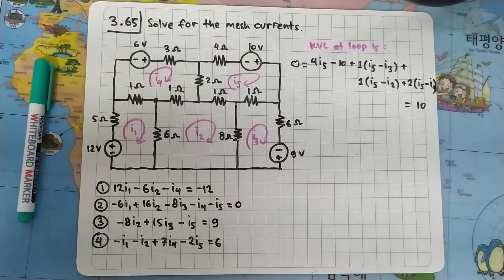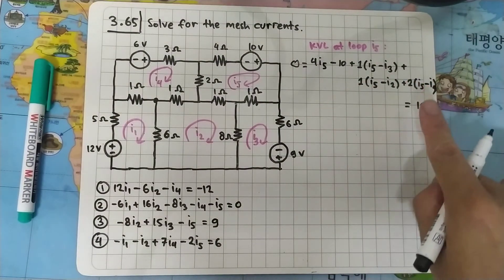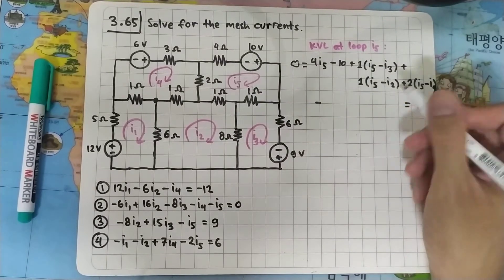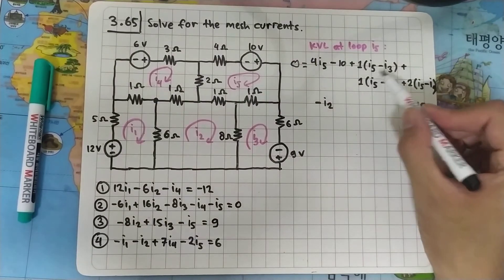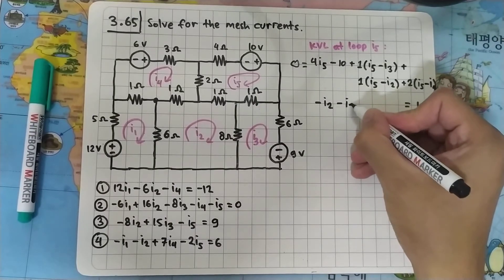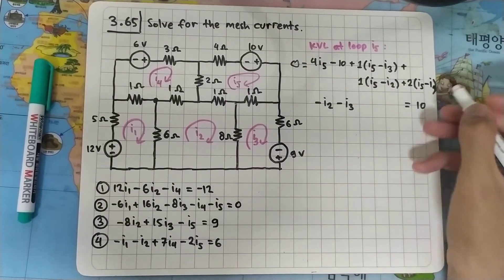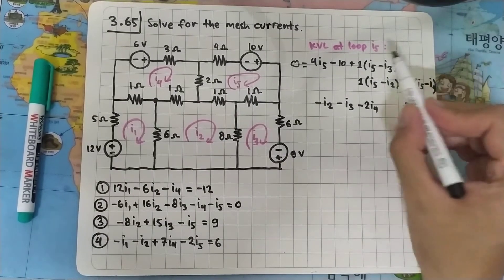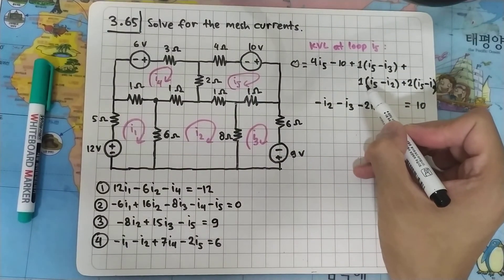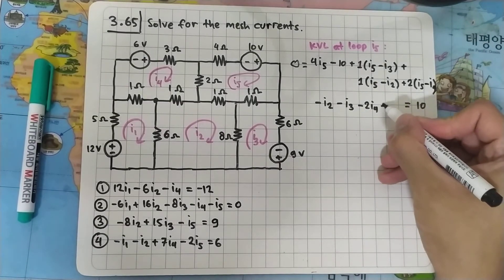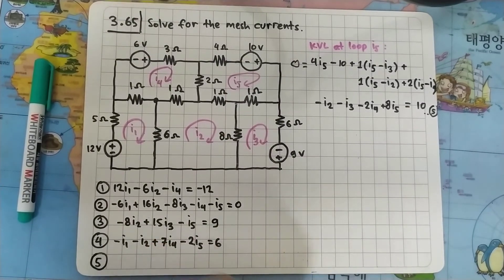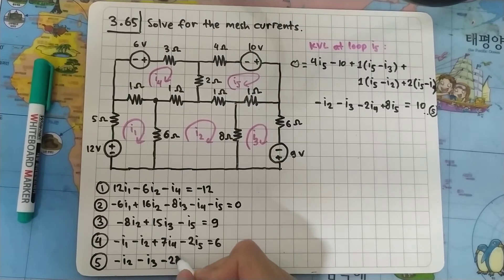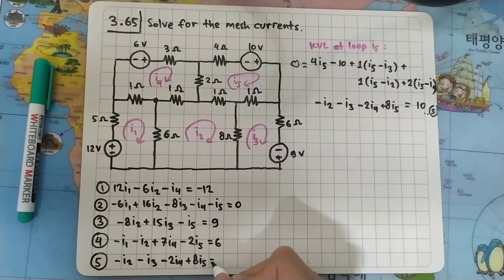There is no I1 term. The coefficient of I2 comes only from that term: minus I2. For I3 it is only from that term: minus I3. For I4 it is minus 2·I4. For I5 we have 4 + 1 + 1 + 2 = 8, so 8·I5. The full equation is: minus I2 − I3 − 2·I4 + 8·I5 = 10. This is equation number 5.